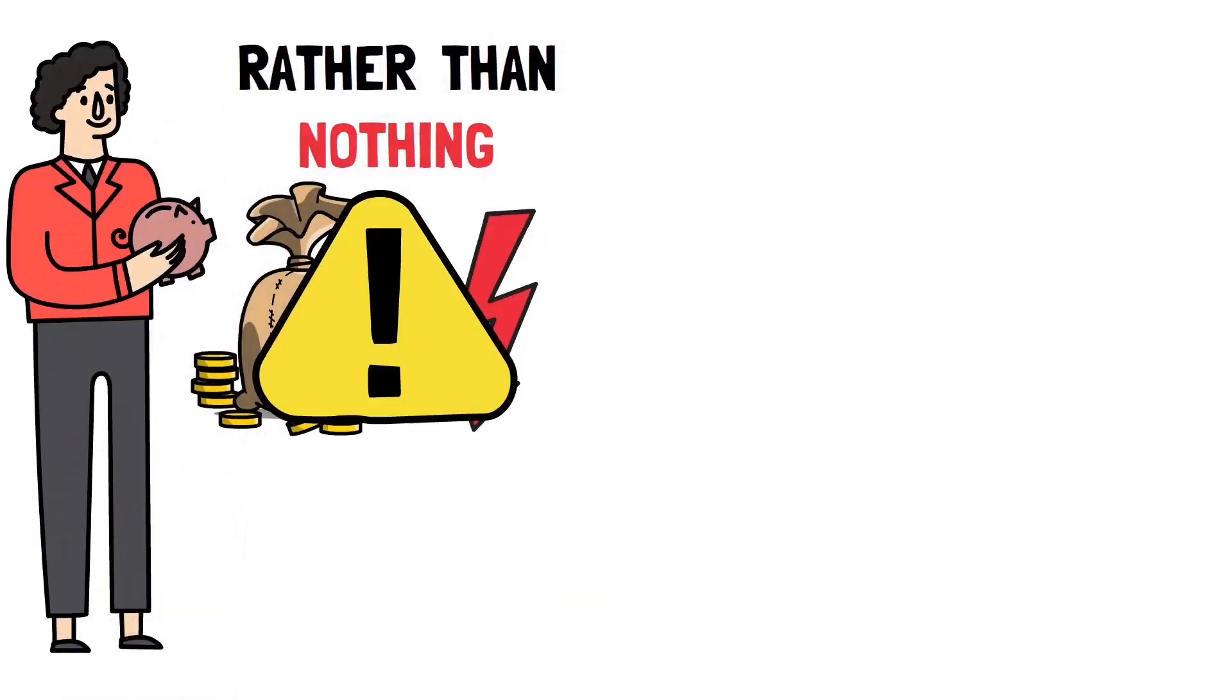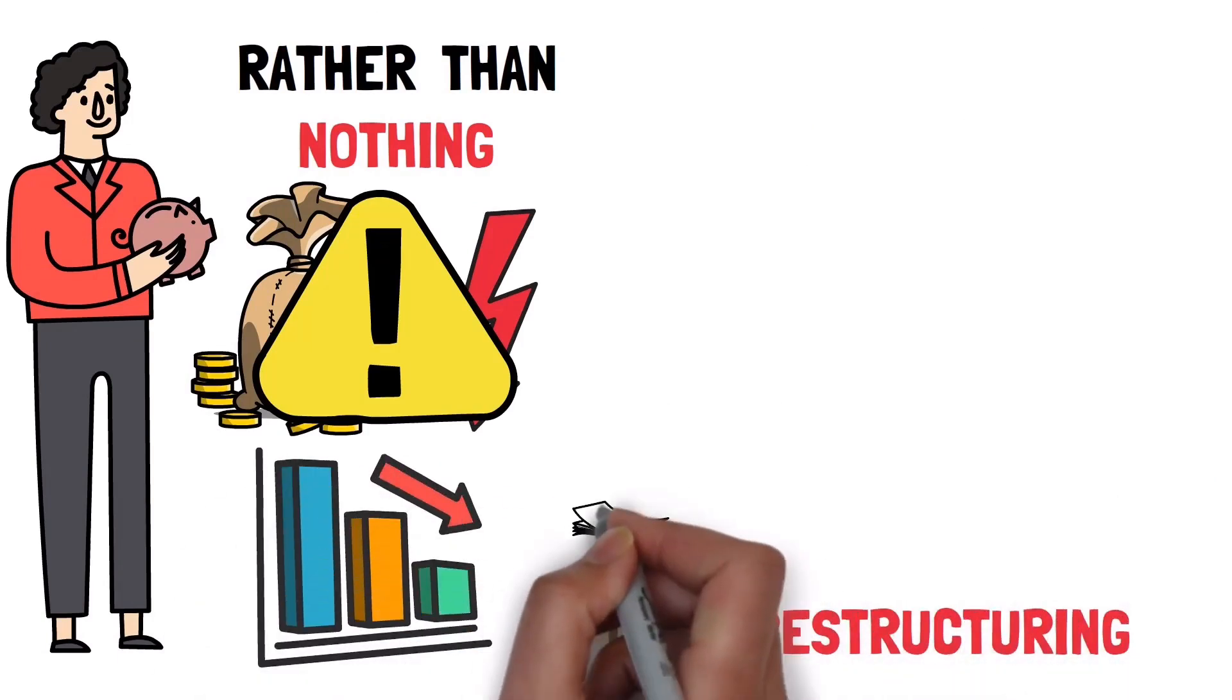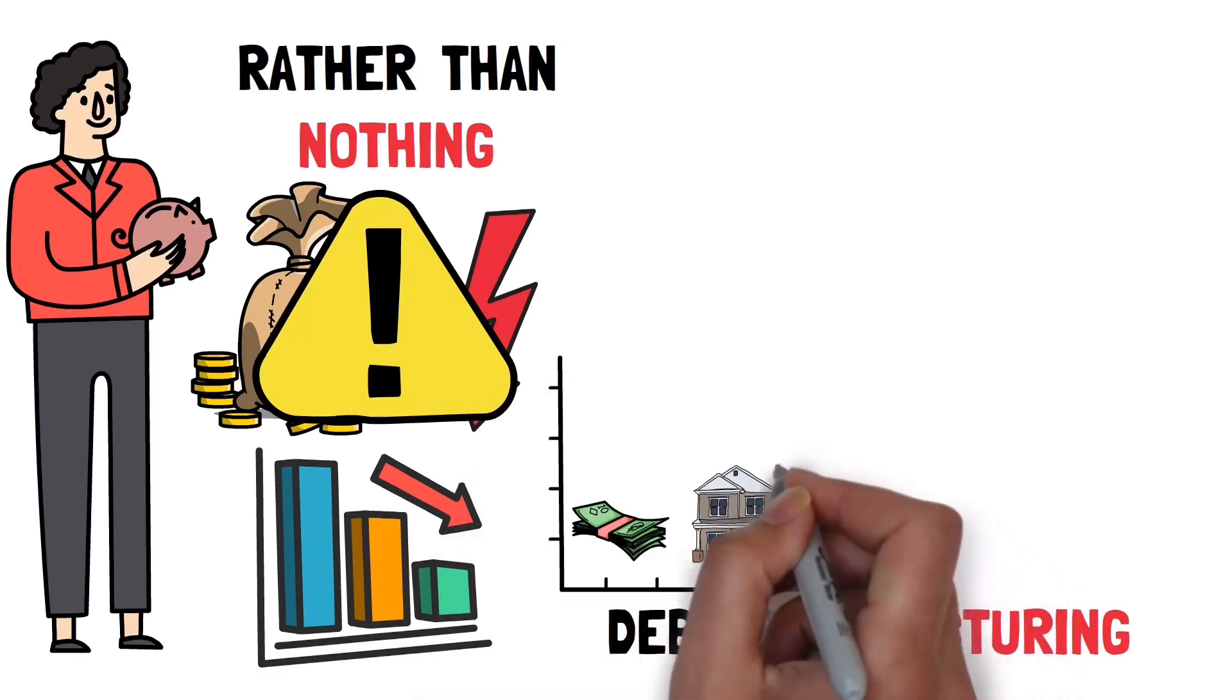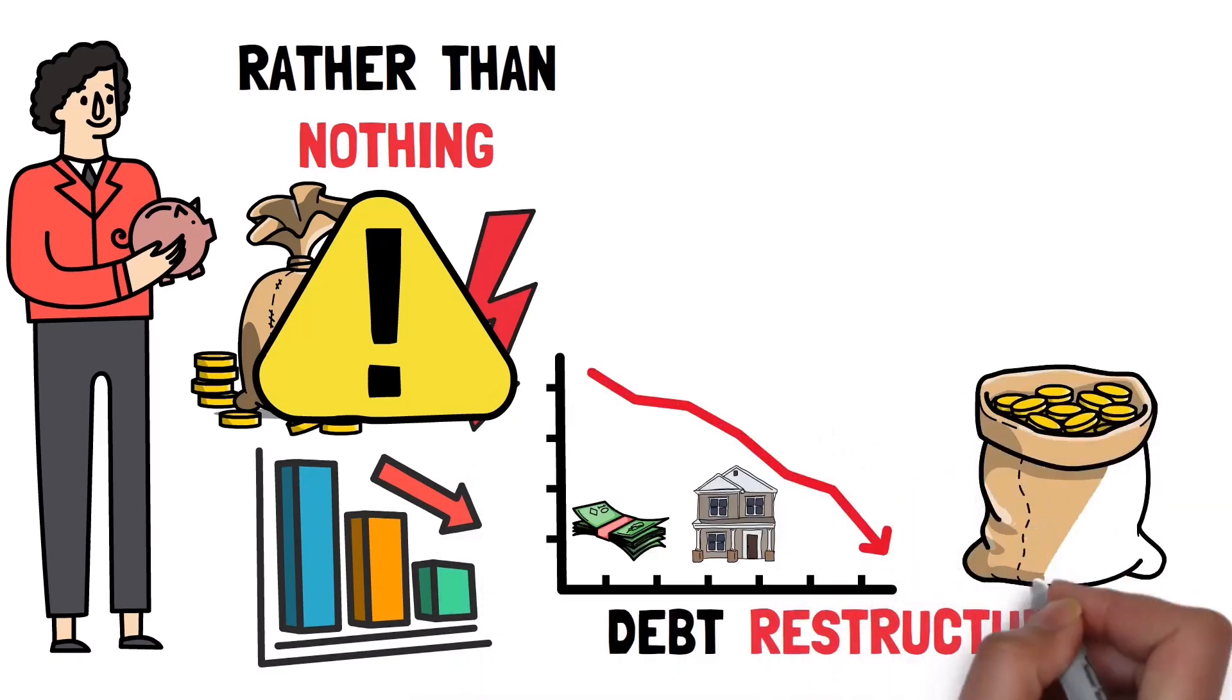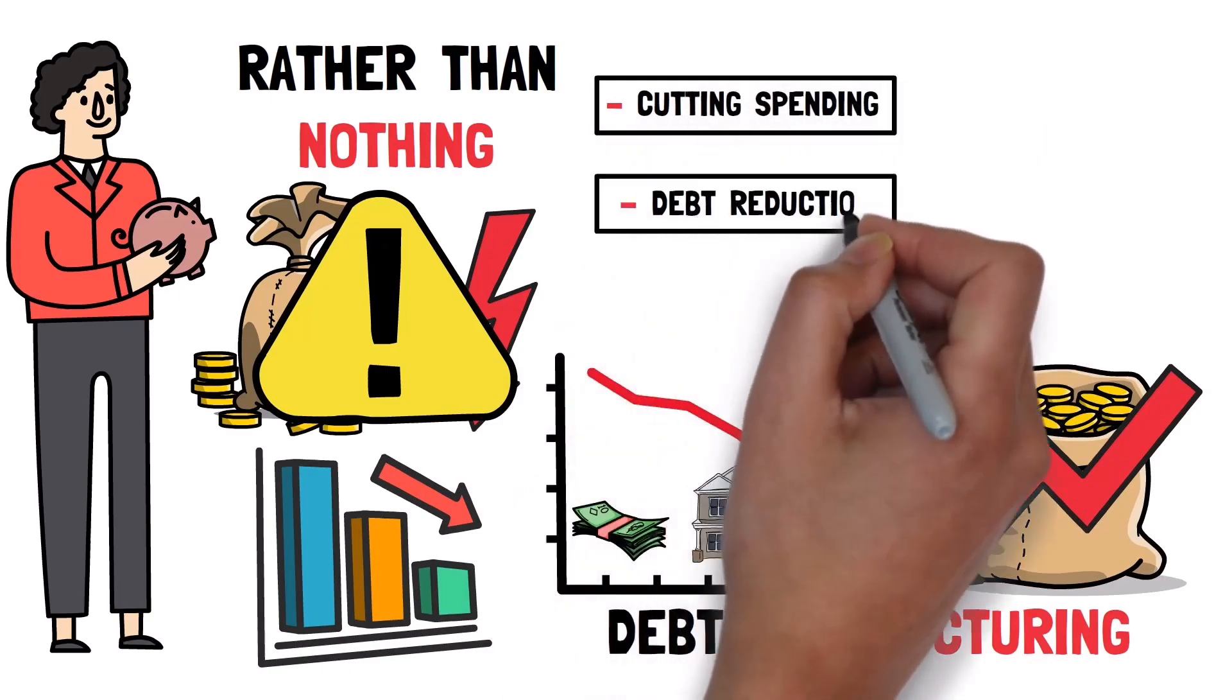But here's the issue. Even though the debts are lower, debt restructuring makes people's incomes and the value of their assets go down faster. This makes the debt problem worse. Similar to cutting spending, debt reduction can lead to deflation.